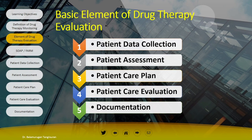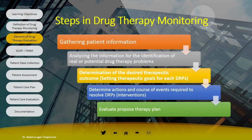There are five basic elements of drug therapy evaluation: patient data collection, assessment, patient care plan, care evaluation, and documentation. Although there are five elements, if you go into detail there are actually 10 important steps, and these steps must be done systematically.